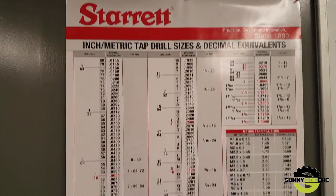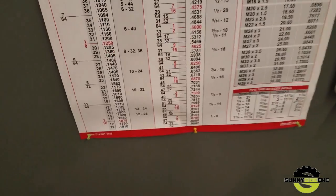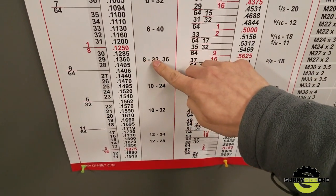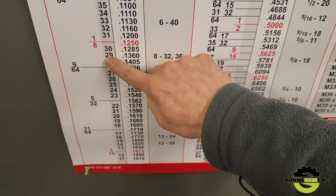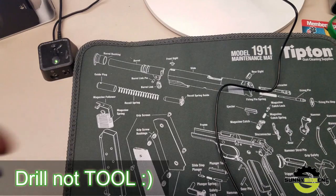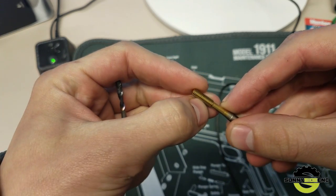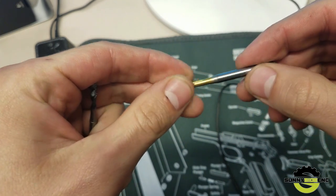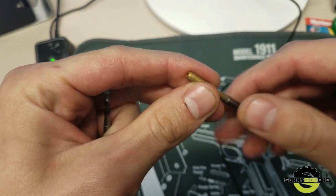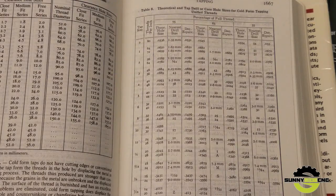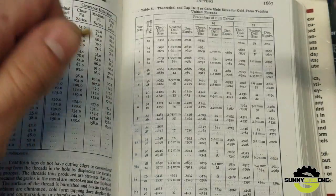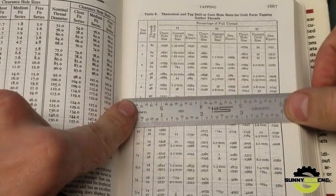Most of you have charts just like these. If we look at our thread size which is 8-32, it tells us to use tool 29.136. If you are going to use that drill size for this form tap, it's gonna snap. That drill is way too small for it.